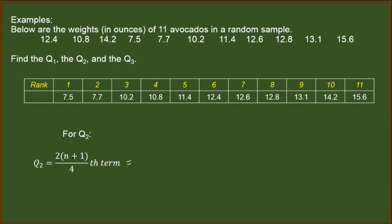Okay, so we have here 2 and here is 11 plus 1 over 4th. So we have here 11 plus 1 is 12 over 4. 2 times 12 is 24. 24 divided by 4, we have 6.